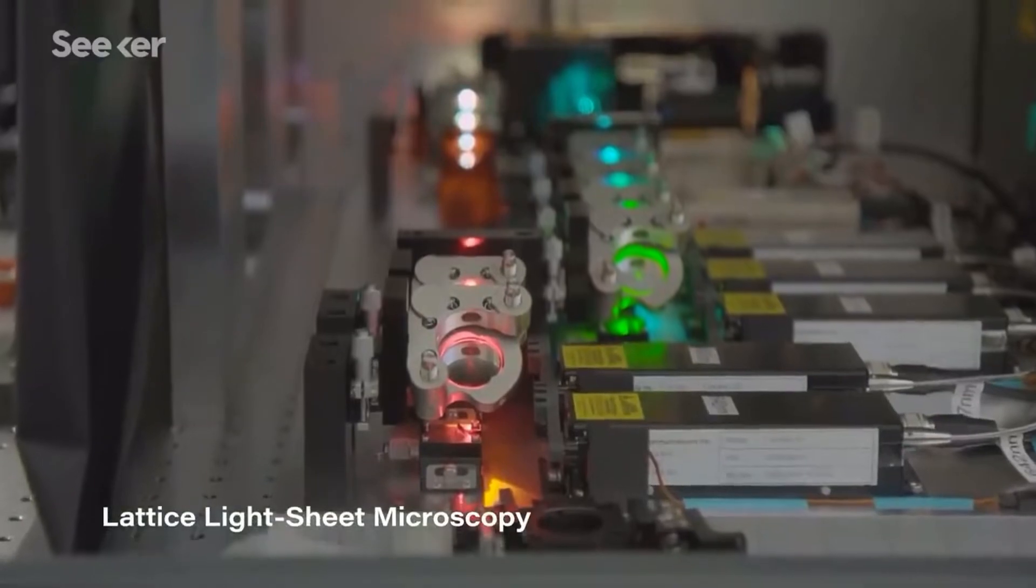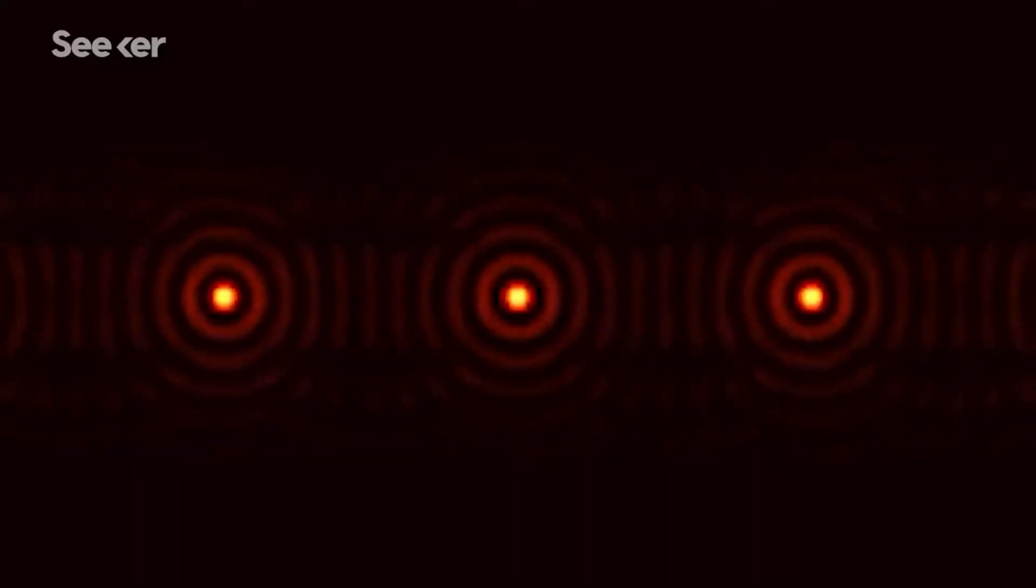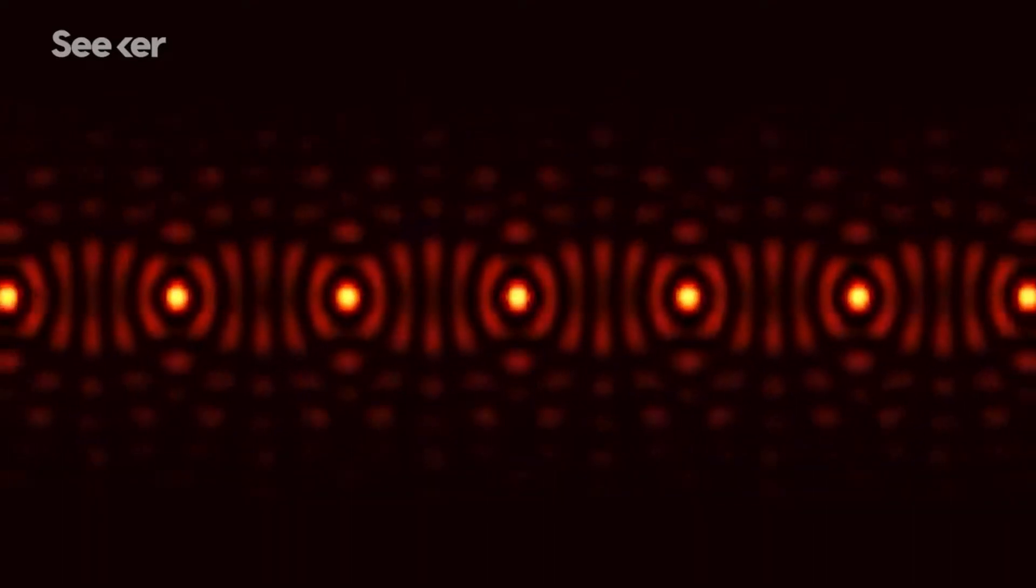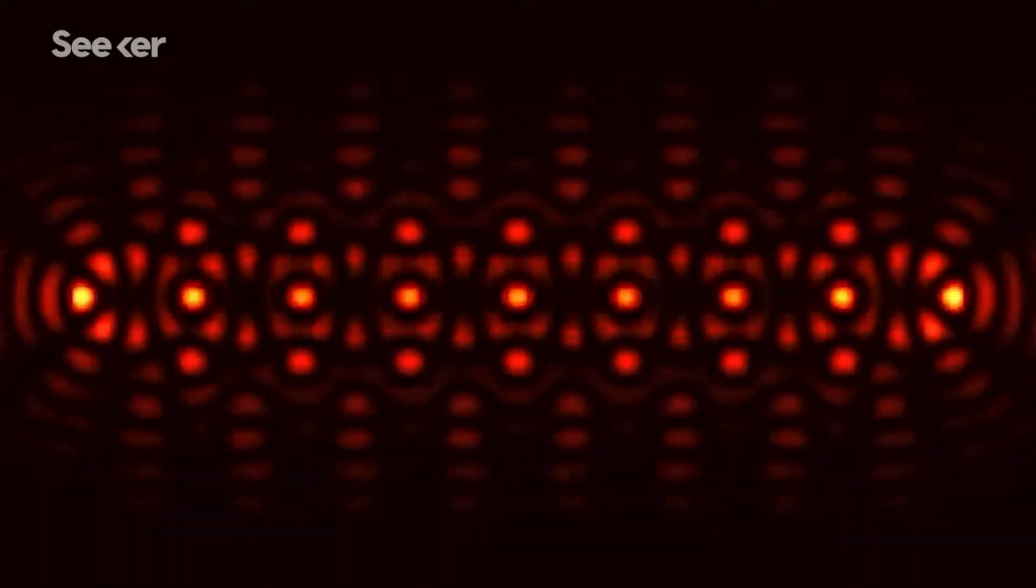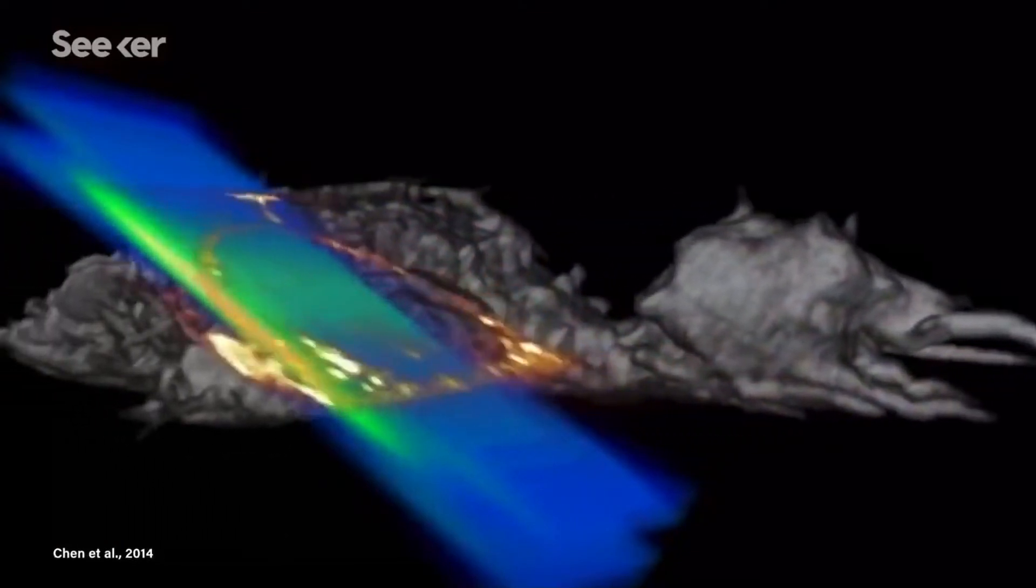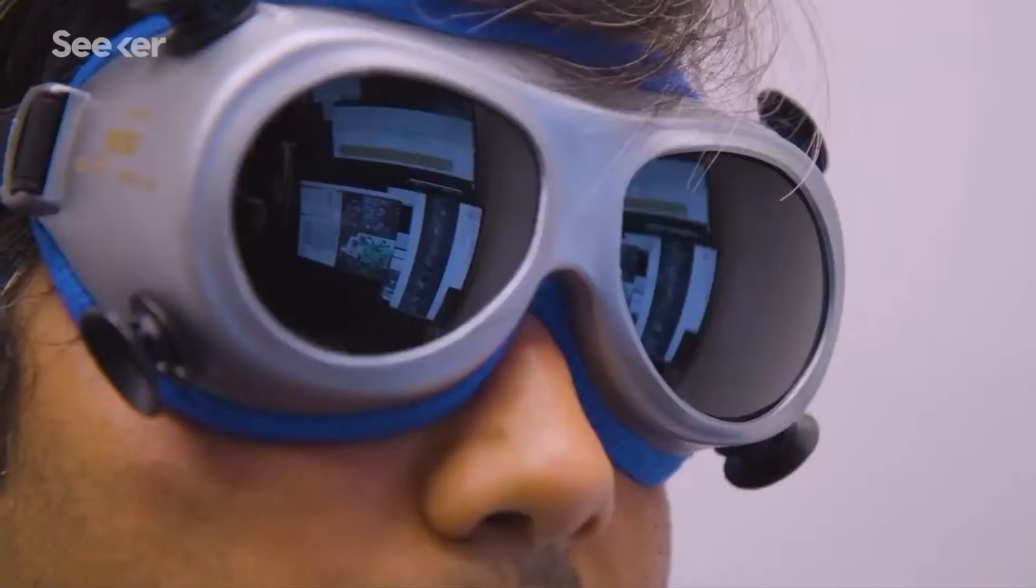Lattice light-sheet microscopy was invented a few years ago to correct for that challenge. That's a non-diffracting beam, meaning that as the beam is traversing through the sample, it's not converging or diverging. We put several of these at very specific positions such that you interfere every beam with itself and then create a very thin sheet of light. This fine sheet of light repeatedly sweeps over a sample in order to avoid the damage that's typically associated with other microscopy techniques.